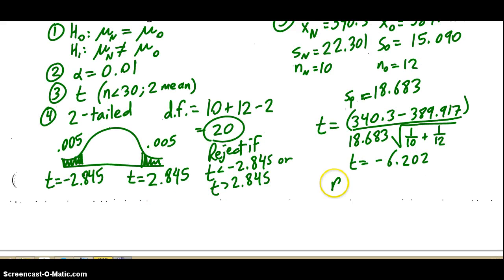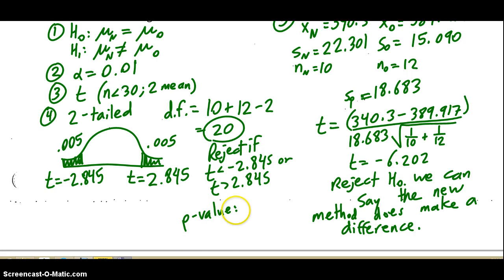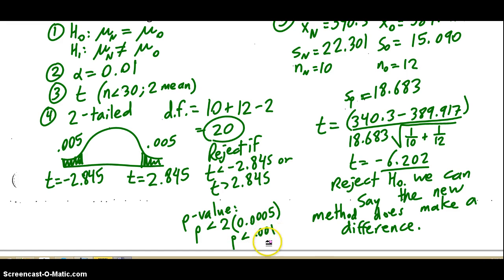Are we going to reject? Absolutely — negative 6.202 is definitely smaller than negative 2.845, so we reject the null hypothesis. The new method does make a difference. For the p-value, look up the t-score in the 20th degree of freedom row. There are no numbers even close to it, so p is actually less than twice 0.0005 — since it's two-tailed. Either way, p is definitely less than alpha. A tenth of a percent is definitely less than one percent, so it is reject.